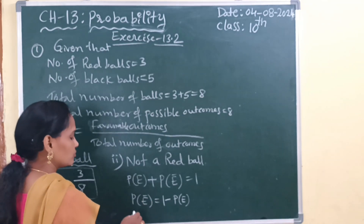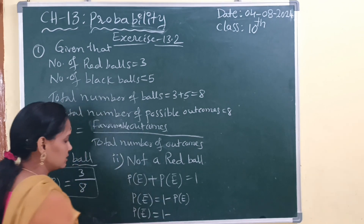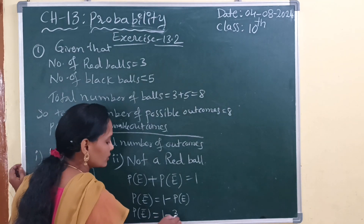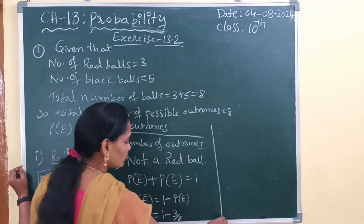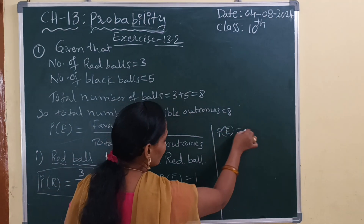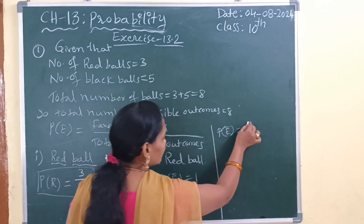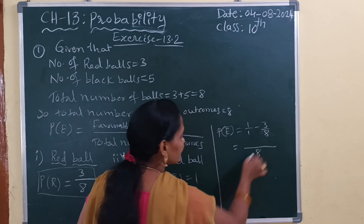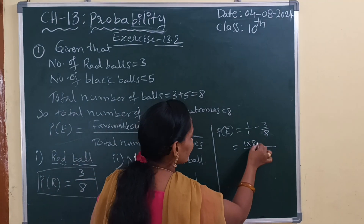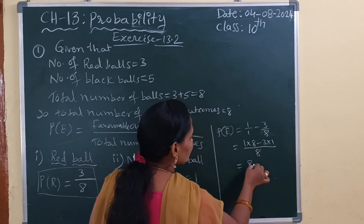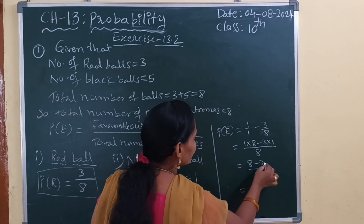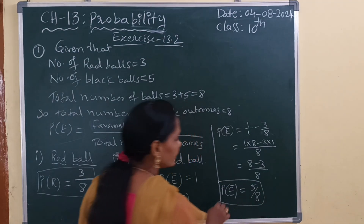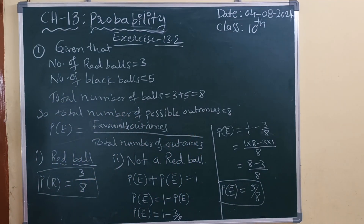E bar we need to find out. Probability of E bar is equal to 1 minus probability of getting a red ball, which is 3 by 8. Take the LCM: 1 by 1 minus 3 by 8. LCM is 8, so 1 into 8 minus 3 into 1 equals 8 minus 3, which is 5 by 8. Probability of getting not a red ball is 5 by 8.